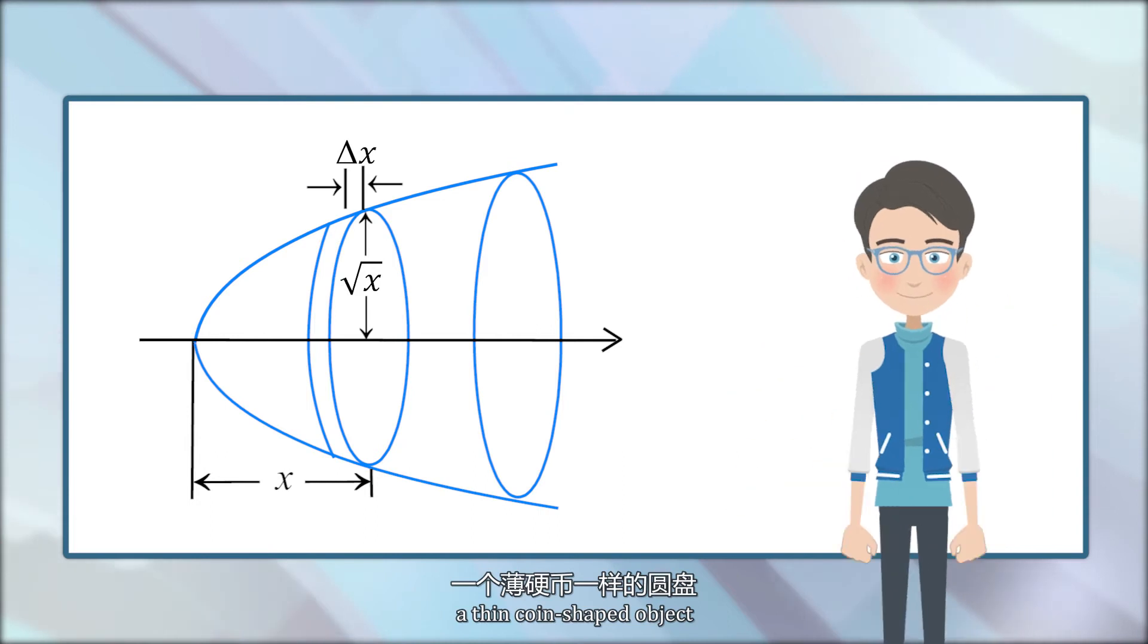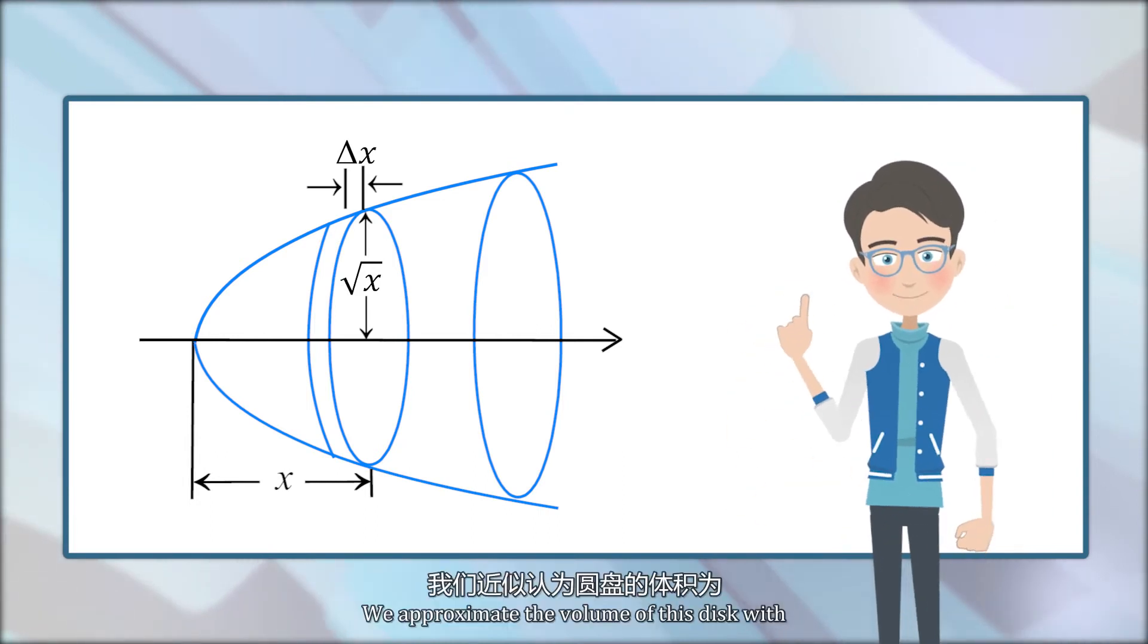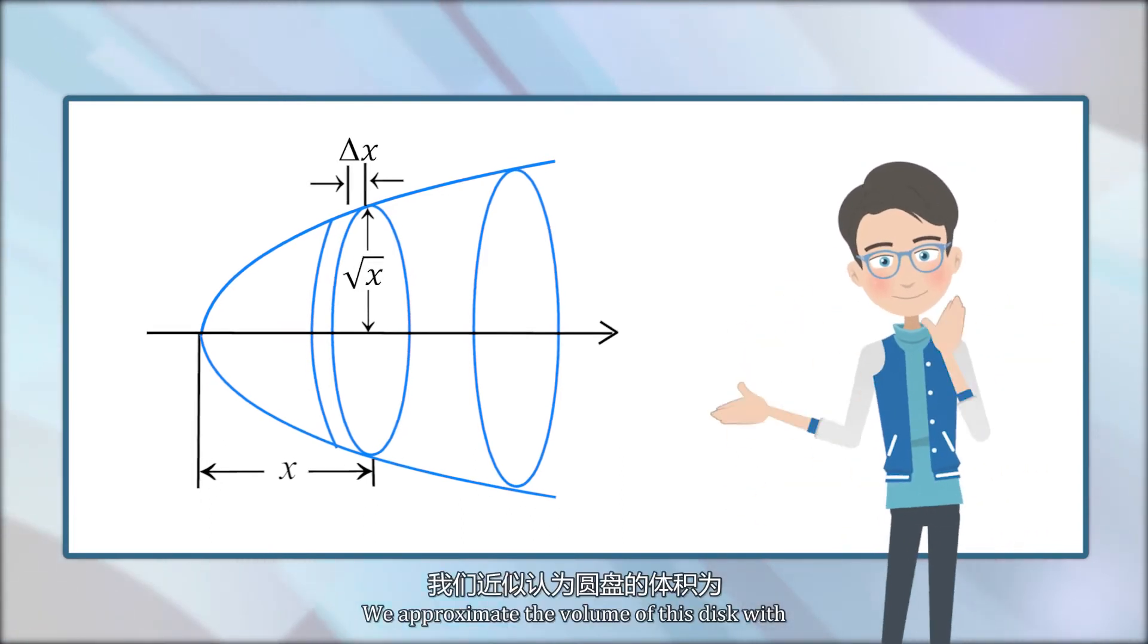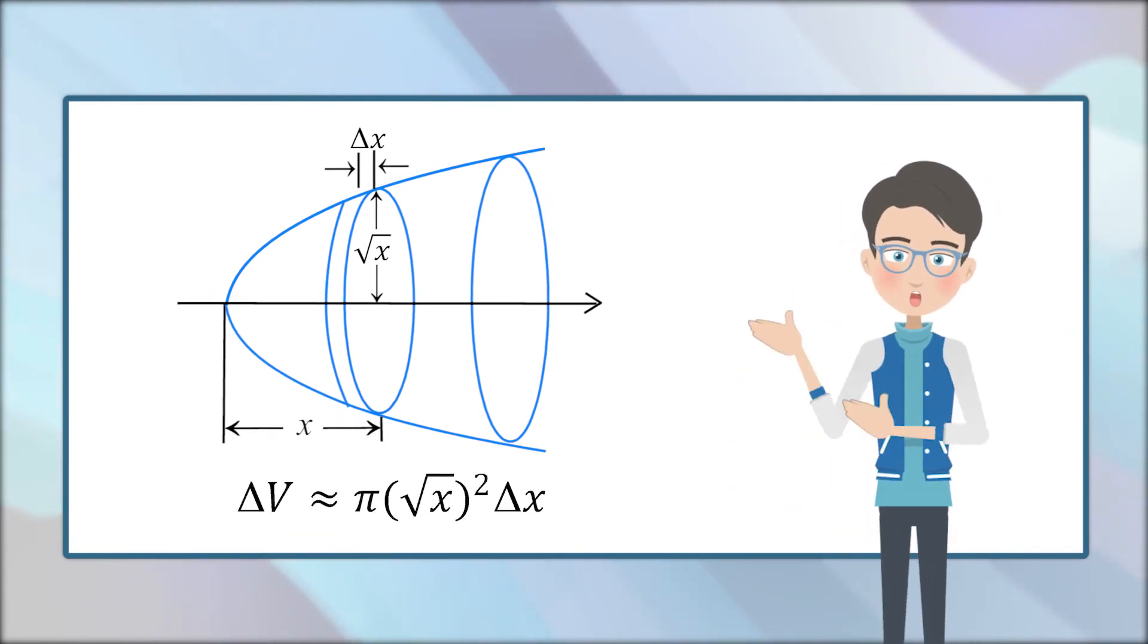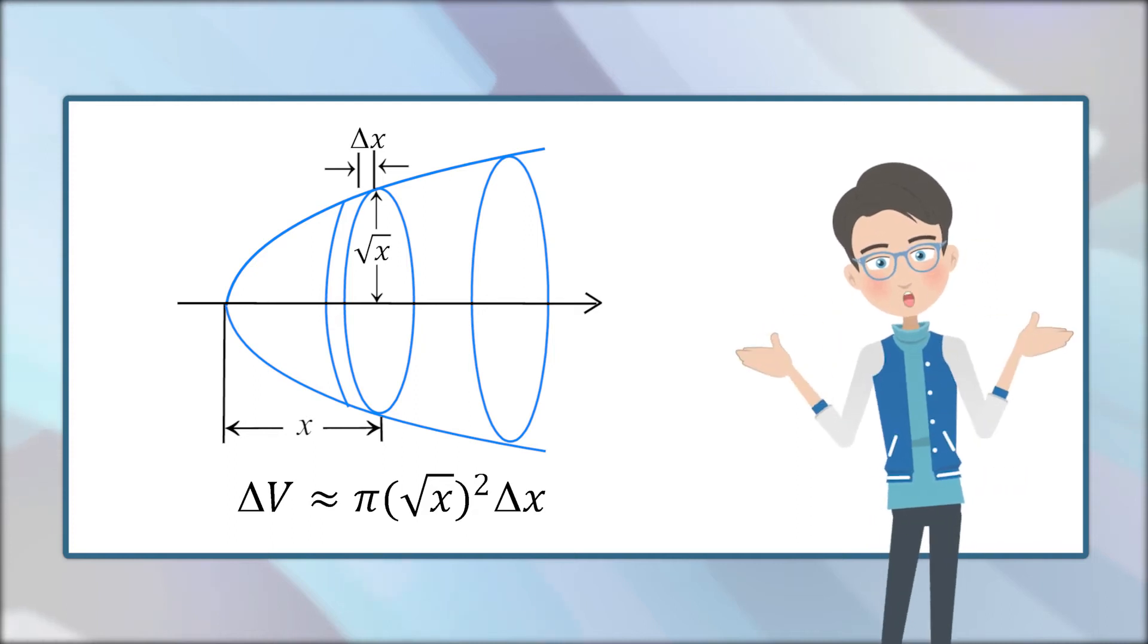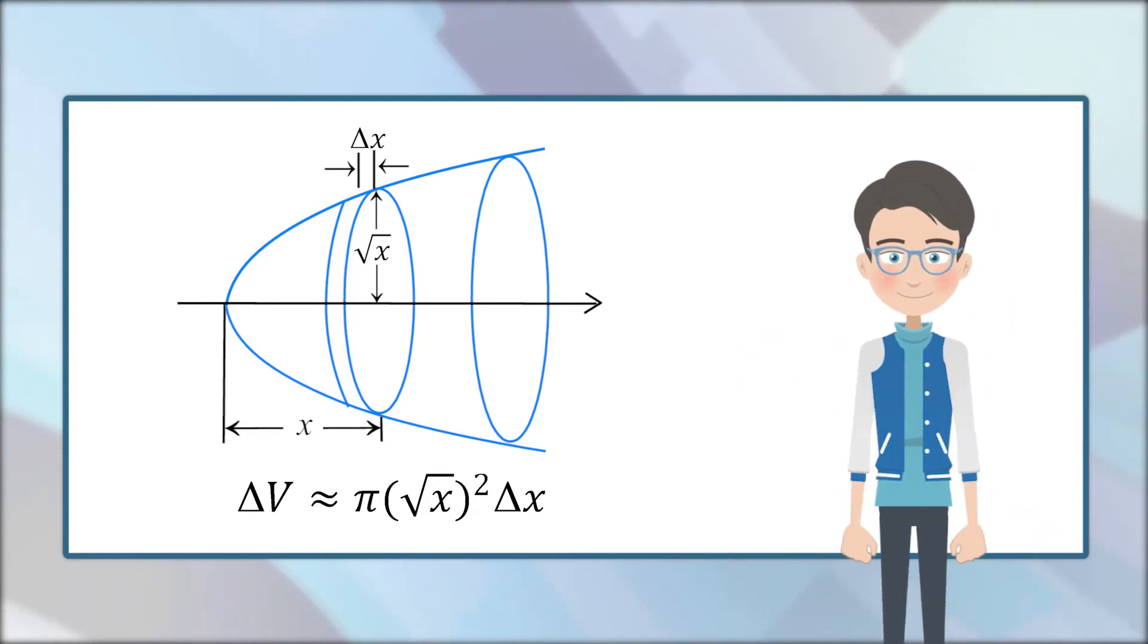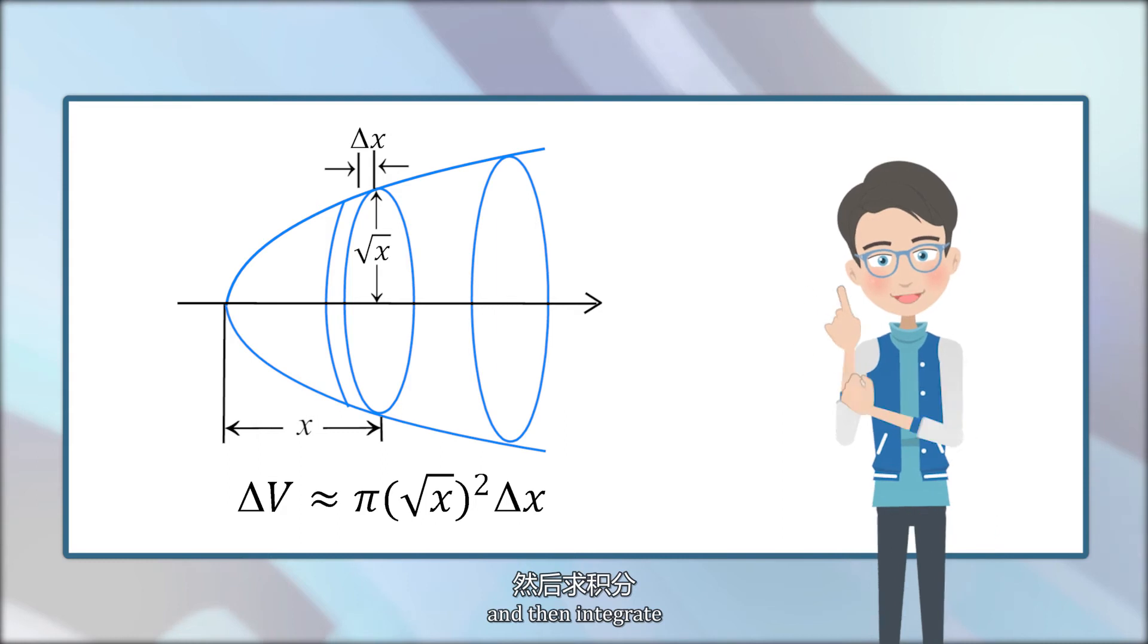We approximate the volume of this disk with ΔV approximately equals π times (√x)² times Δx, and then integrate.